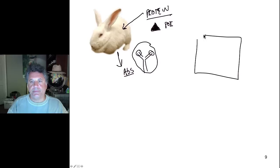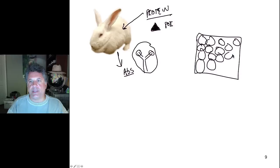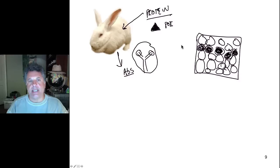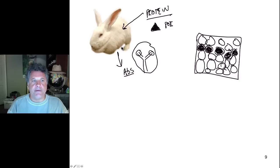Let's say we have a tissue with many different cells in it. Only a certain subset of cells contains this protein - some cells are expressing the gene that encodes that protein whereas the other cells aren't. We can't just look at the tissue and discern that. We need to be able to use a tag that will tell us whether or not that protein is present and in what cells it's present.